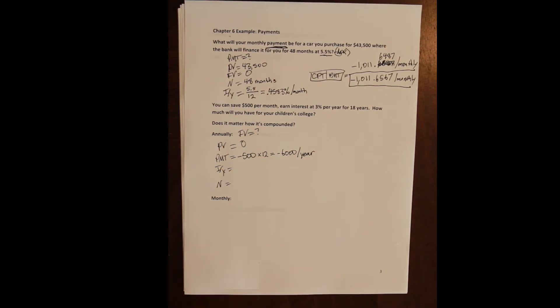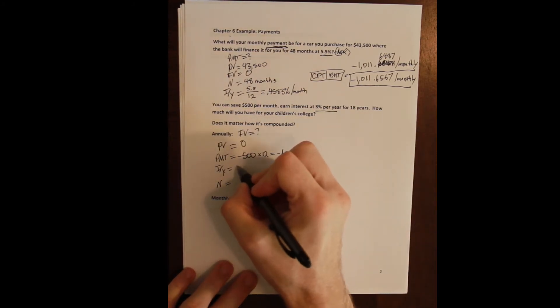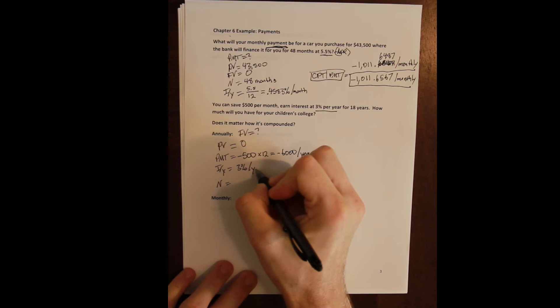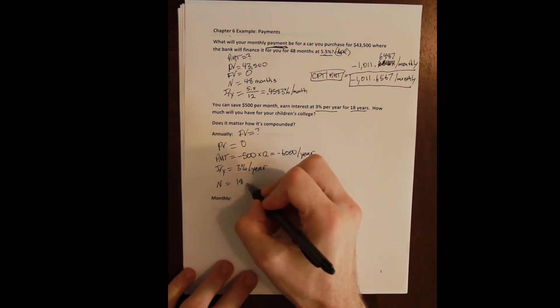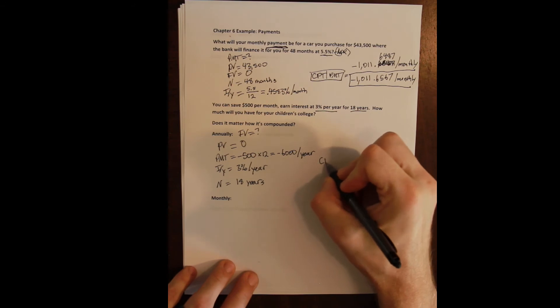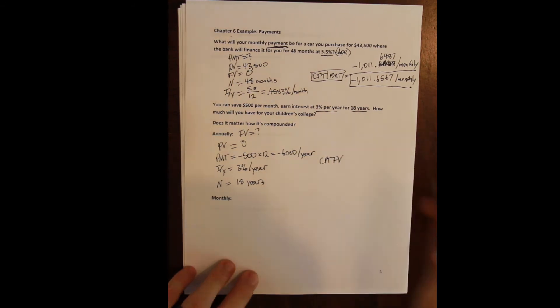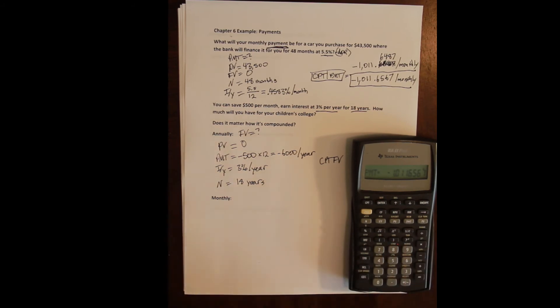So I need to convert my payment to an annual payment, which is five hundred times twelve, or six thousand dollars cash outflow per year. Now my I/Y is already given at the APR: three percent per year. And my N is also already given as an annual number of compounding periods—it is going to compound for 18 years.